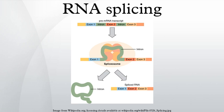By contrast, when the intronic flanking sequences do not follow the GU-AG rule, non-canonical splicing is said to occur. The minor spliceosome is very similar to the major spliceosome, however it splices out rare introns with different splice site sequences. While the minor and major spliceosomes contain the same U5 snRNP, the minor spliceosome has different but functionally analogous snRNPs for U1, U2, U4, and U6, which are respectively called U11, U12, U4atac, and U6atac. Unlike the major spliceosome, it is found outside the nucleus, but very close to the nuclear membrane.